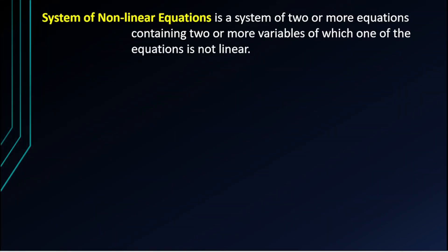A system of nonlinear equations is a system of two or more equations containing two or more variables of which one of the equations is not linear — or in other words, at least one equation is not linear.